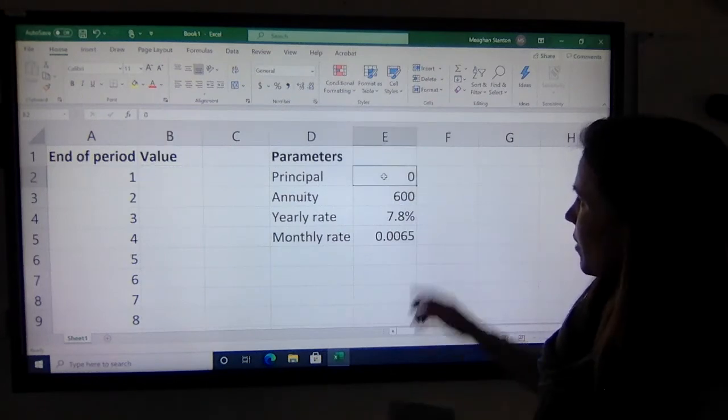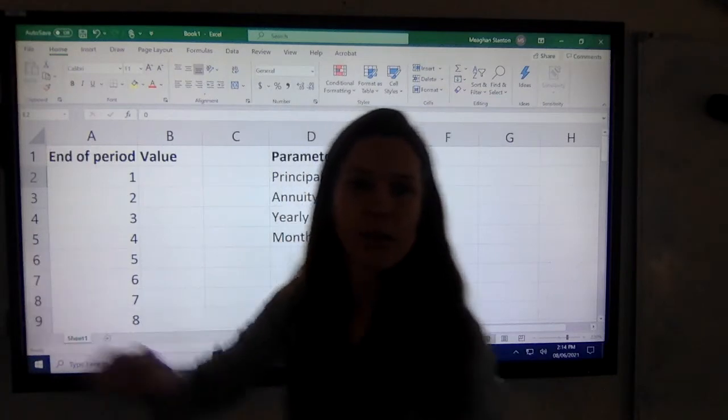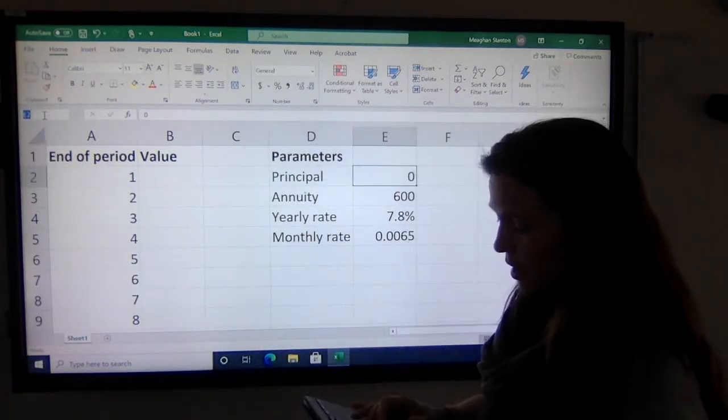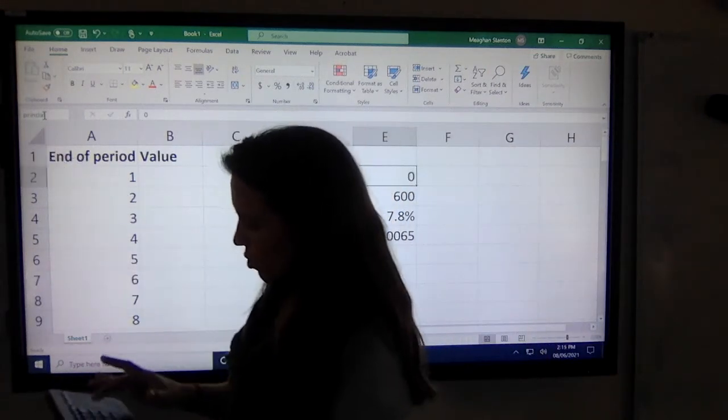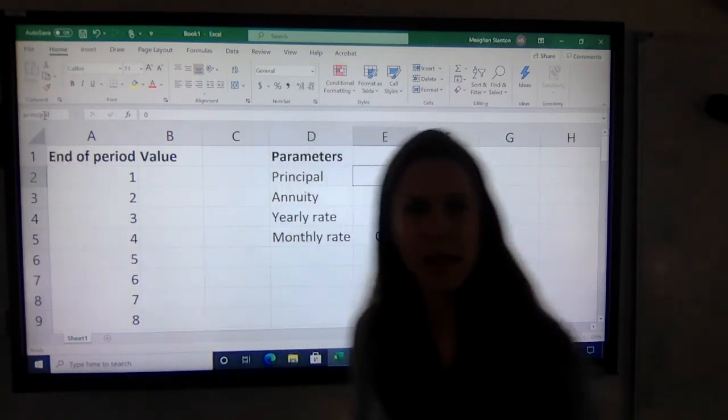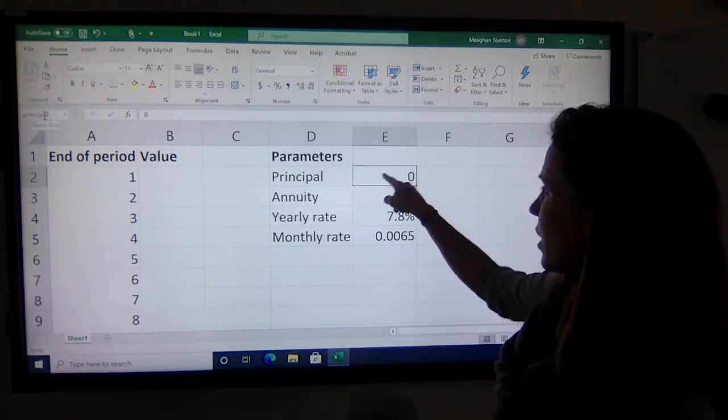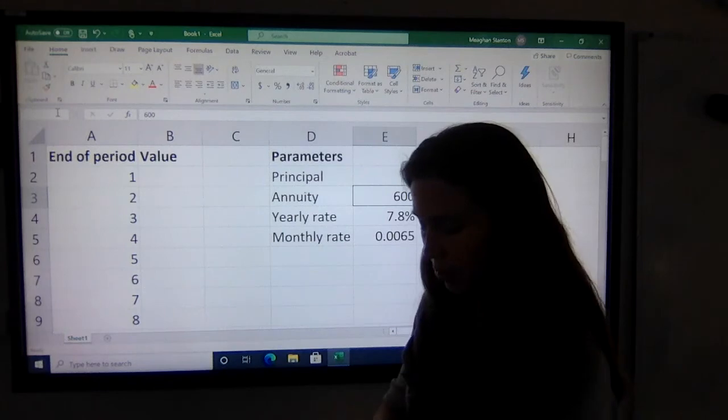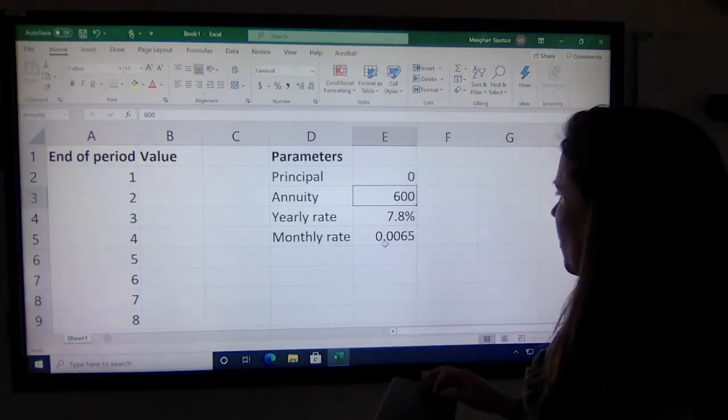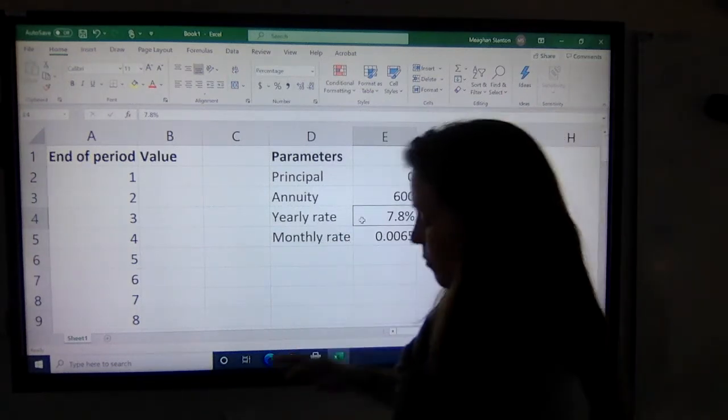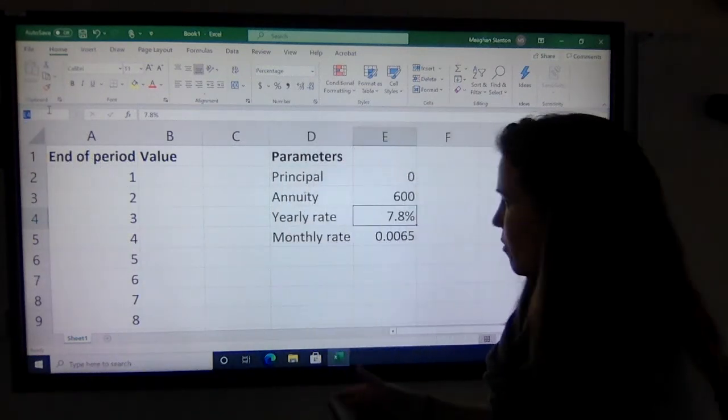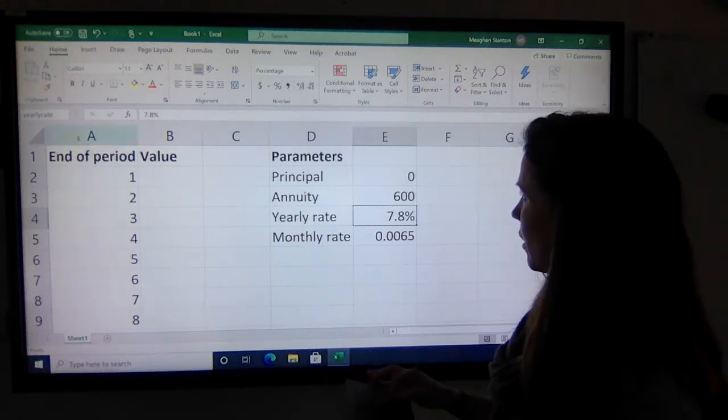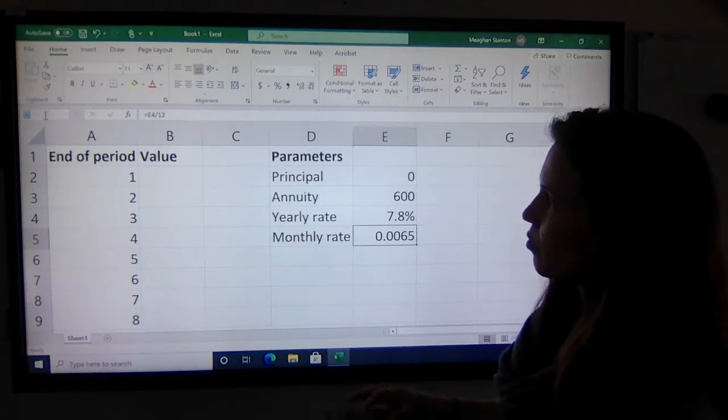The other thing you can do is actually name the cell. If I click over here in this E2 cell, you'll see that over here in the corner, if I click on it, E2 comes up. I can now name that Principal. When naming cells, you have to make sure you don't use any spaces in the name. Now that cell is called Principal. Let's do the same with the annuity. Click on the box, go up into that top corner, and call it Annuity. For the yearly rate, we need to use no spaces, so we'll call it YearlyRate. And for E5, we'll call it MonthlyRate.